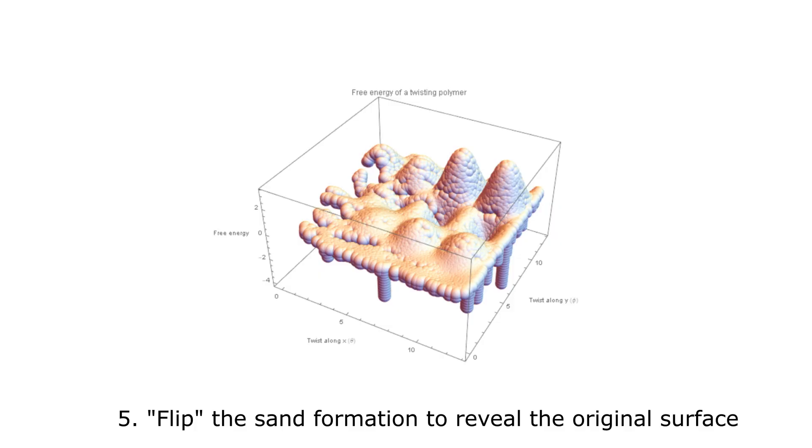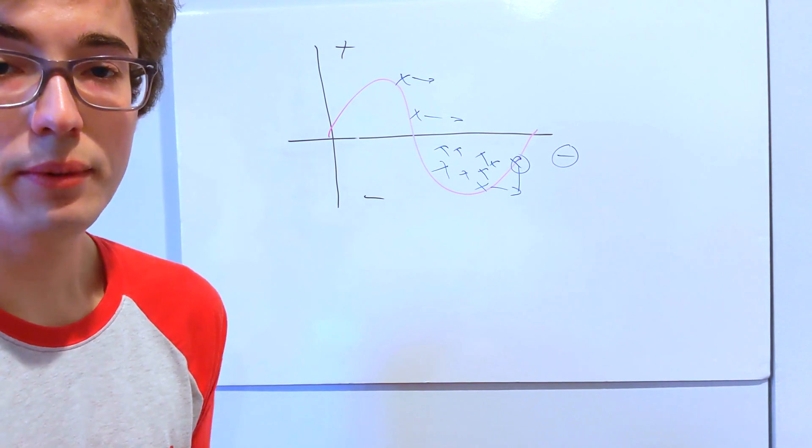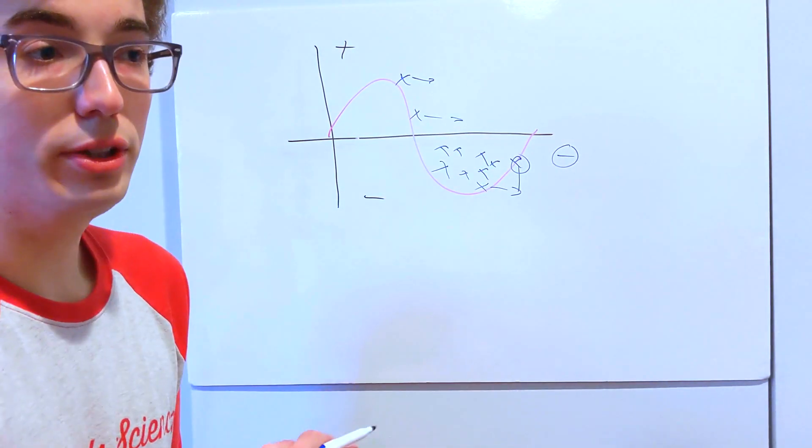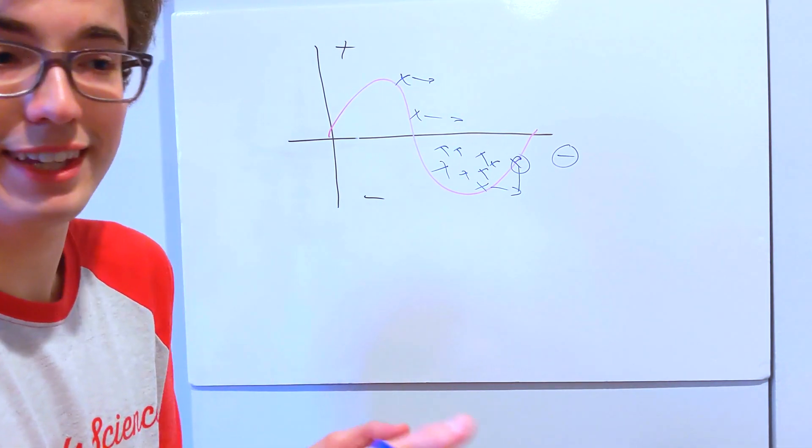And what you're left with is kind of like a negative space filling of this free energy surface. And now you can flip it upside down and get what the actual surface looked like in the original. And in our computational sand analogy, that means summing up all of the negative heights of all of the sand parcels. That will show you what the original topography of the surface looked like, which is the one that the ant was exploring.